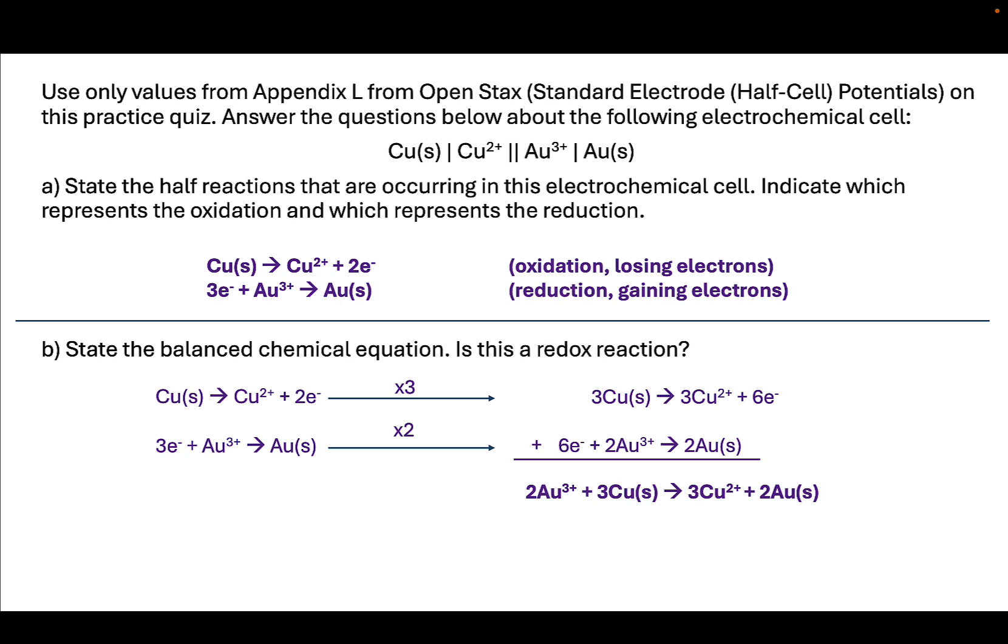This is our balanced chemical equation. We now have copper balanced, we have gold balanced, and we have the charge balanced. Implied by this redox reaction, which this is a redox reaction, we know that six electrons are being transferred.